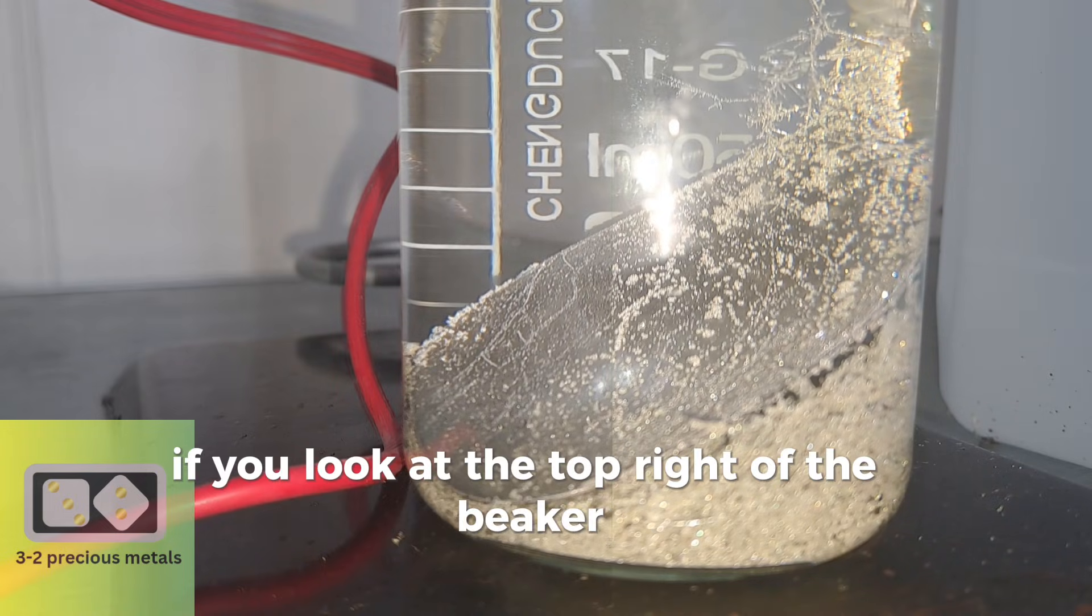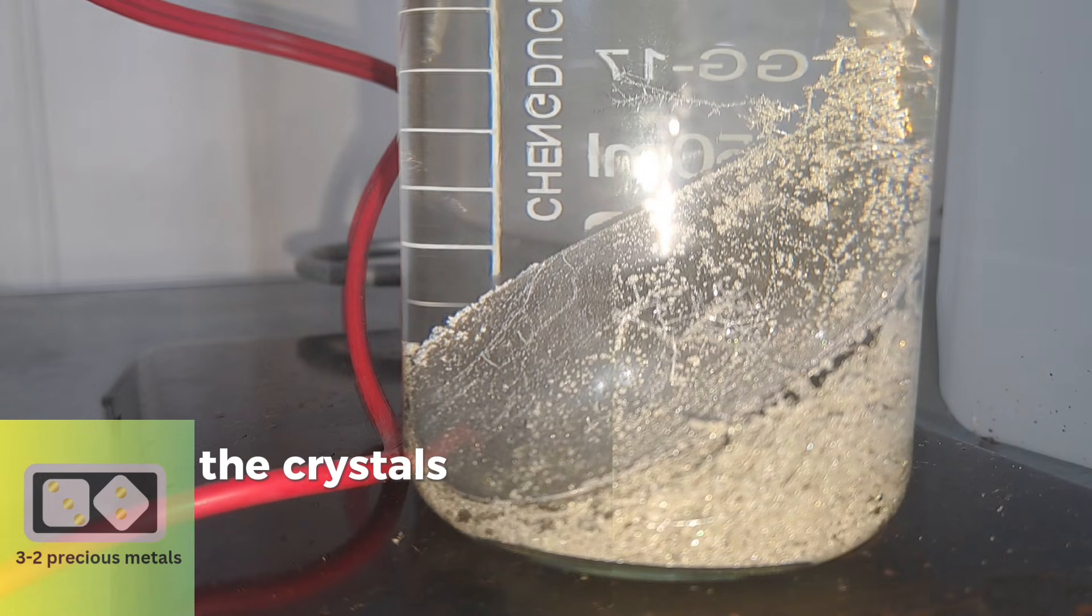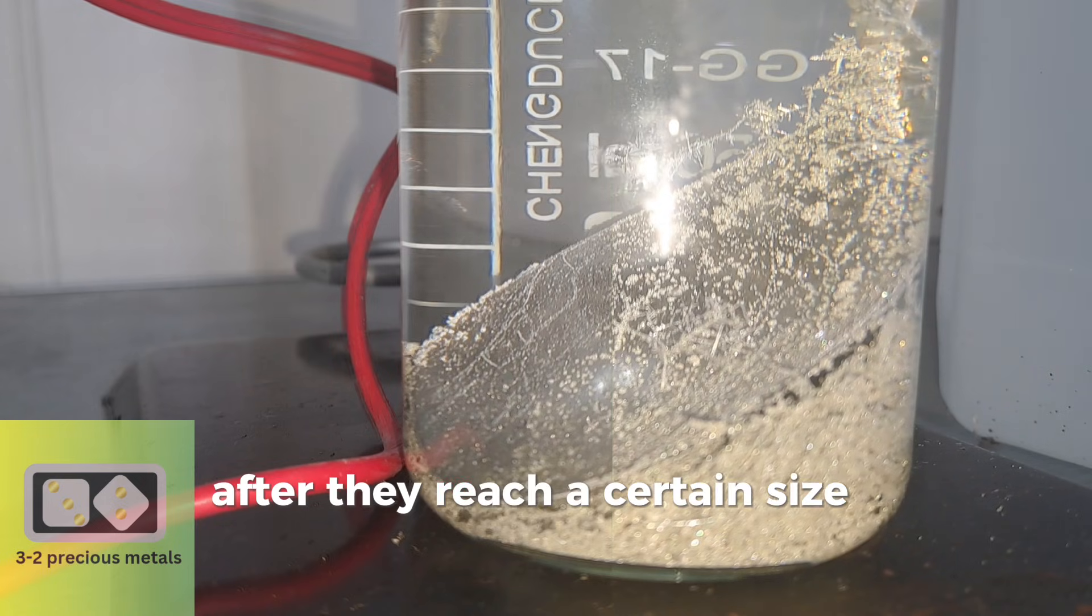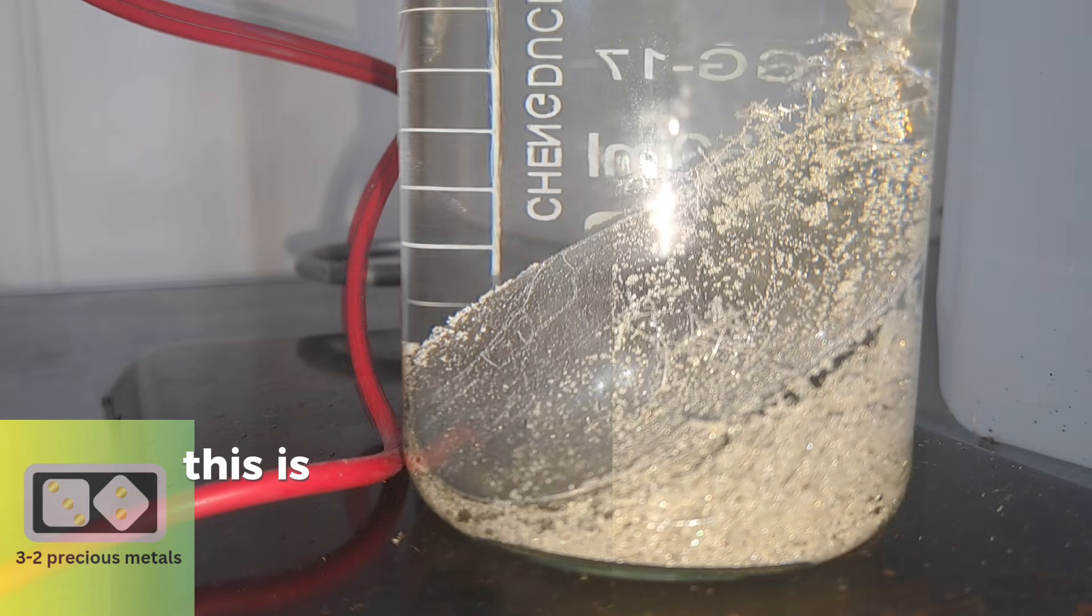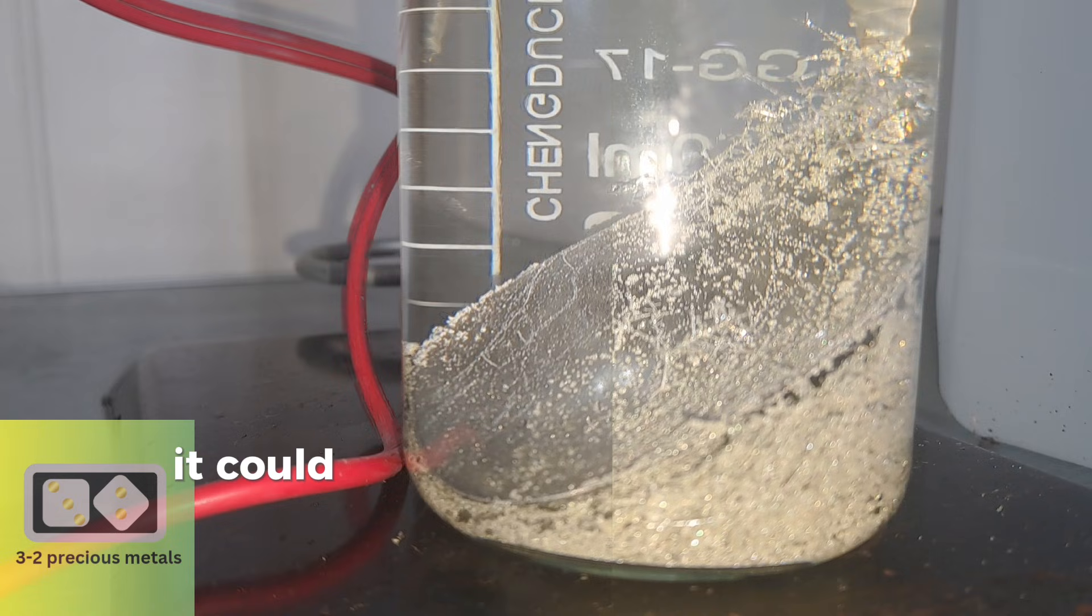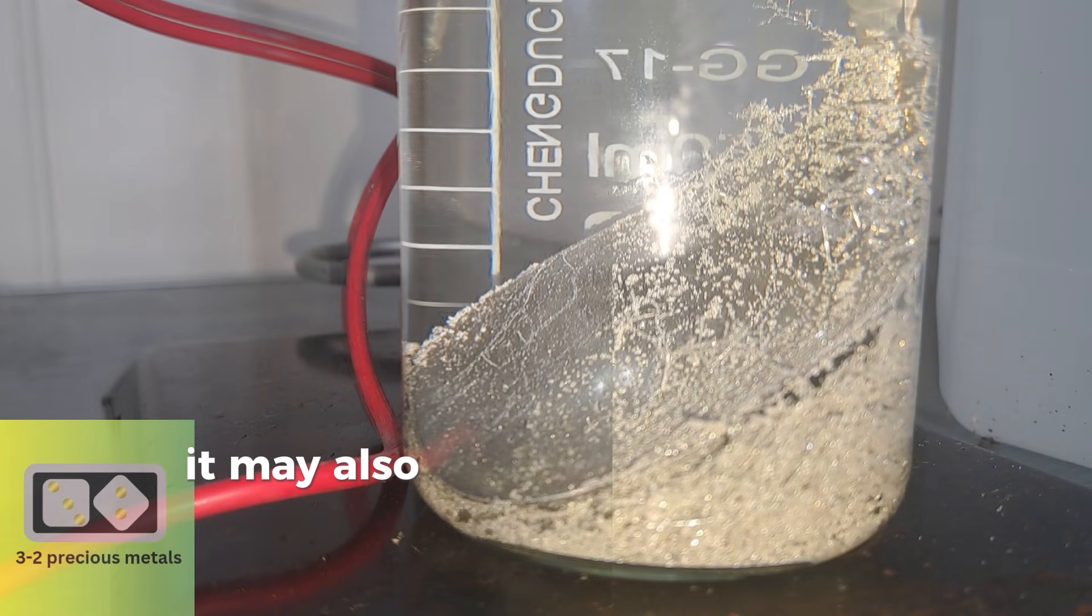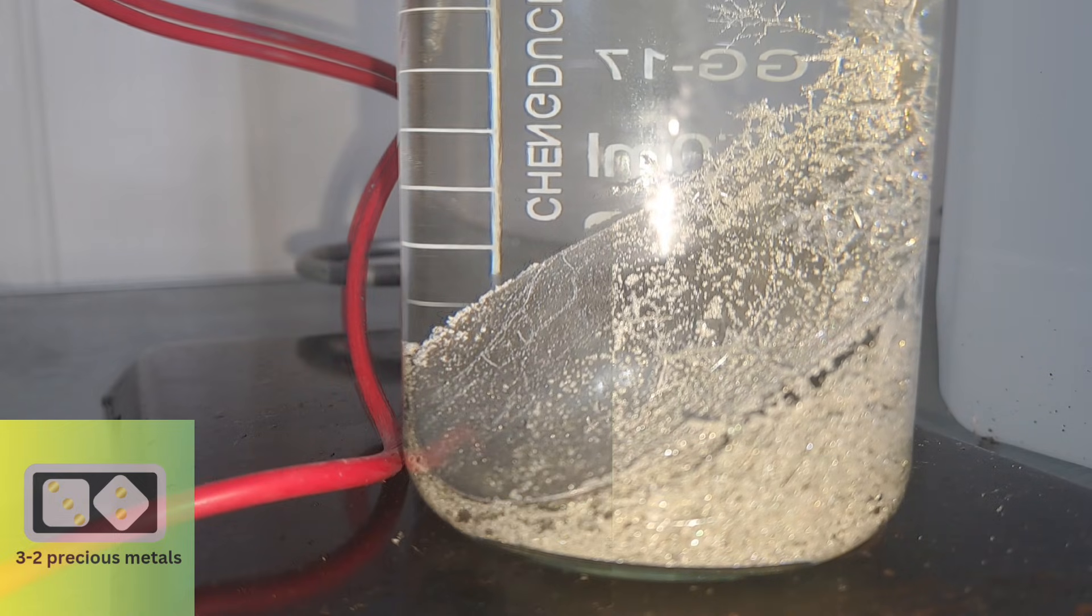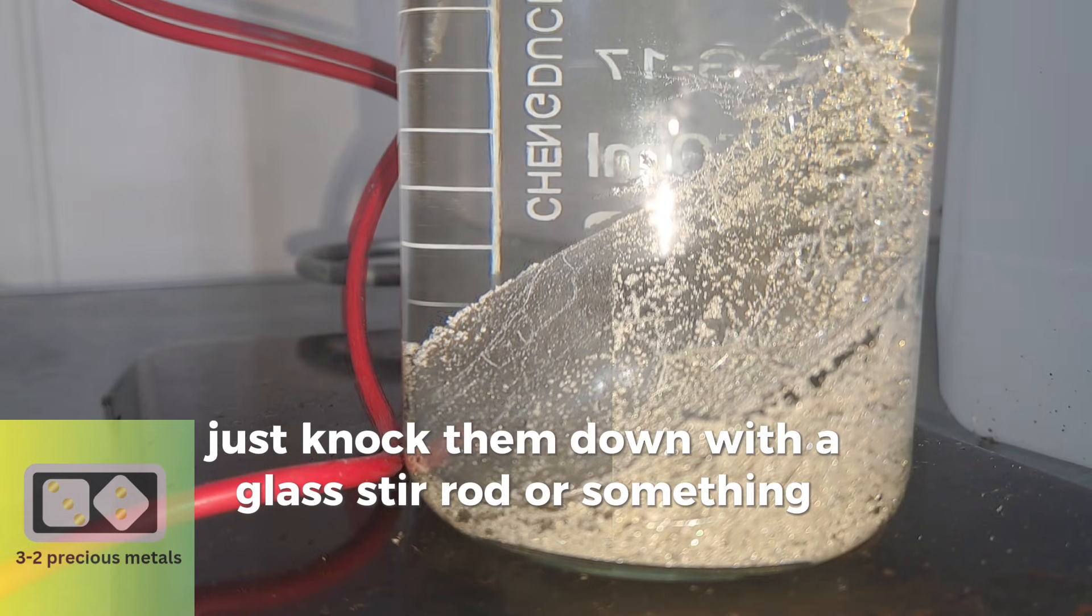If you look at the top left of the beaker, you will notice the larger crystals reaching out across the beaker. The crystals are trying to grow towards the anode. After they reach a certain size, they collapse under their own weight and fall down. This is something that you need to be mindful of. If the crystals reach the anode, it could cause a short circuit and trip out your power supply. It may also burn a hole through your filter, and it could contaminate your pure crystals. If they start to get too close, just knock them down with a glass stir rod or something similar.